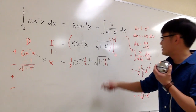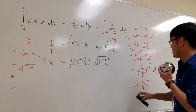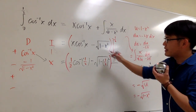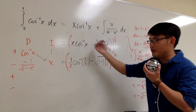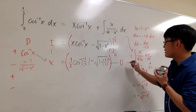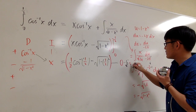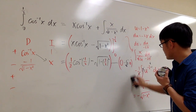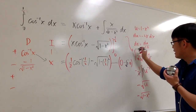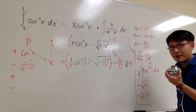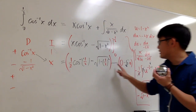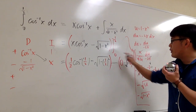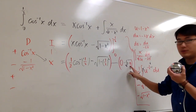Then we subtract the expression evaluated at 0. Plugging in 0, the first part gives 0 times inverse cosine of 0, which is 0. The second part is minus square root of 1 minus 0. So plugging 0 in gives 0 minus square root of 1, which we subtract from the first part.